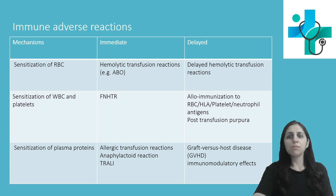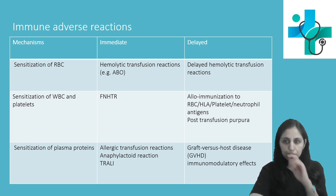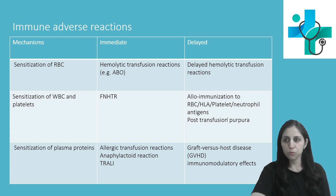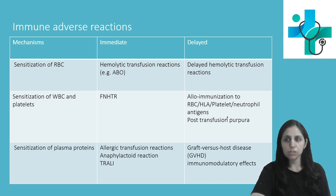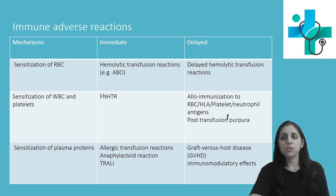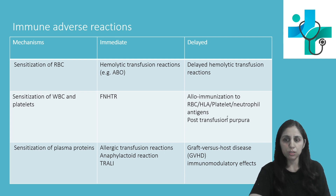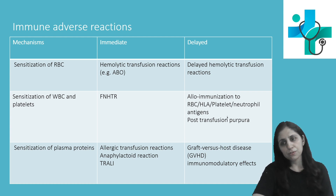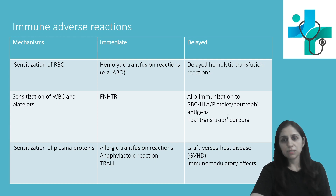Post-transfusion purpura occurs rarely but is more commonly seen in multiparous women with a history of blood transfusion or platelet transfusion. The mechanism for development is immune complex formation against human platelet antigen, known in short as HPA1A. The clinical feature is that the patient presents with thrombocytopenia and bleeding, usually after 4 to 10 days.